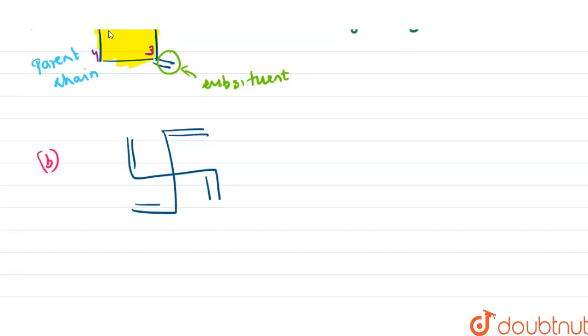If we want to decide the parent chain, then the parent chain will be looking like this. This will be our parent chain that I am highlighting with the green pen. This is the parent chain.